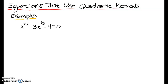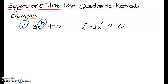This is a continuation of the last two videos. We're still working with equations that use quadratic methods to solve. We're going to start off with an equation that has rational exponents. Notice that the exponent one-third is half of the other exponent, just like when we had x to the fourth minus 3x squared minus 4 equals 0, where the exponent of 2 is half of 4 — it looks like a quadratic trinomial.